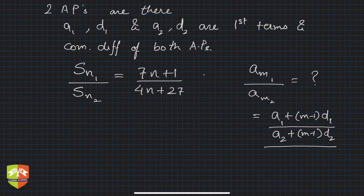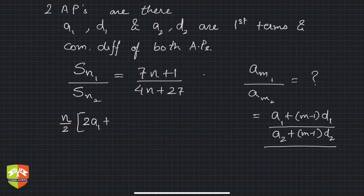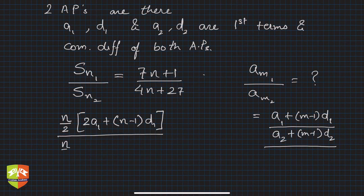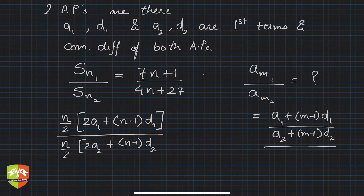Sn1 is the sum of the first n terms: (n/2)(2a1 + (n-1)d1). Similarly for the second AP: (n/2)(2a2 + (n-1)d2). This ratio is equal to (7n+1) divided by (4n+27).